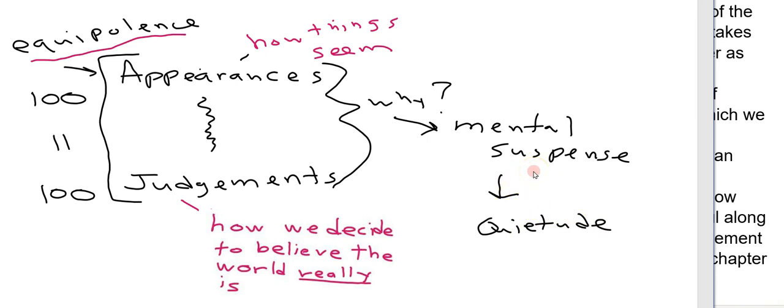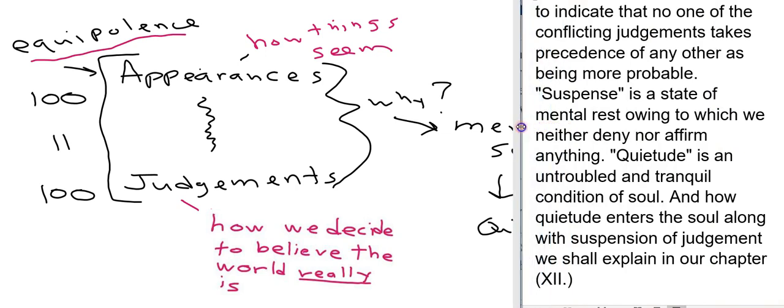And this again is going to be something that I'm supposed to want to have. Okay well what do these mean? In the end of the section he defines them. So suspense is a state of mental rest owing to which we neither deny nor affirm anything. And quietude is an untroubled or tranquil condition of the soul.